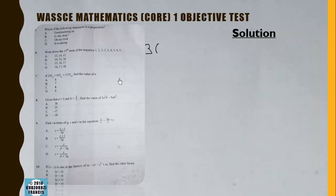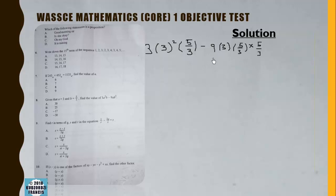We evaluate 3a²b - 9ab² where a = 3 and b = 5/3. For 3a²b: 3×9×(5/3) = 9×5 = 45. For 9ab²: 9×3×(25/9) = 3×25 = 75. So 45 - 75 = -30.